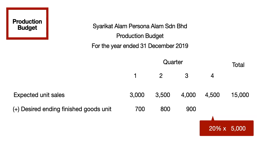For the last quarter of that year, the 20% will be multiplied with 5,000, as targeted by the business that the expected sales will increase by 500 every next quarter. Please note that you need to put the last quarter's ending goods as the total of the ending finished goods.